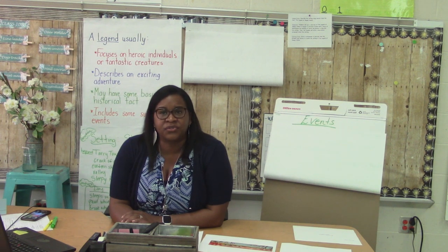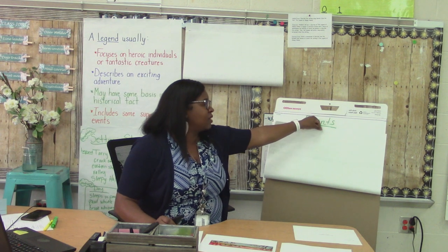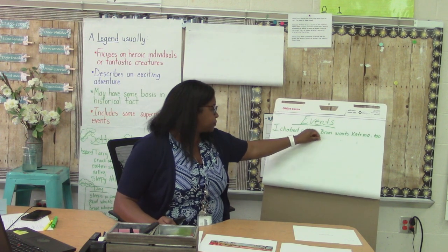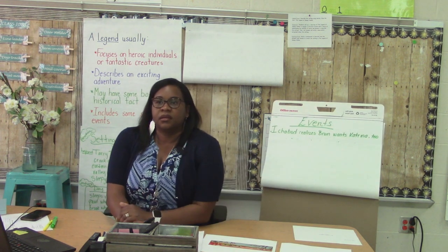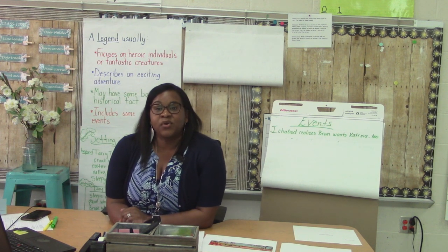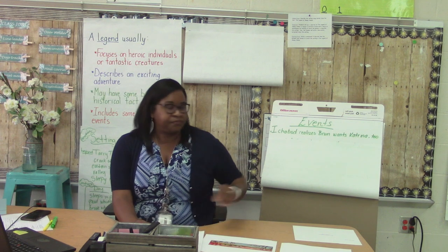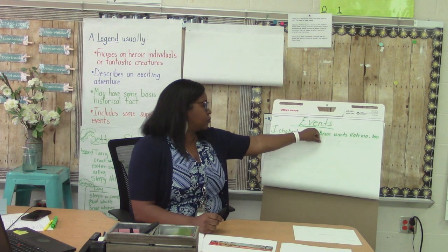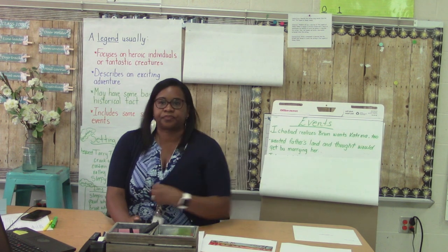This is an important event in the story — Ichabod realizes Brum wants Katrina too. We need to add that to our events chart. Be sure you are writing this on your paper. I'm going to add a few notes as bullet points for myself: 'wanted father's land' and 'thought he would get it by marrying her.' Now let's see what Ichabod does.